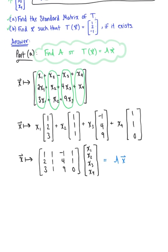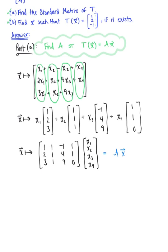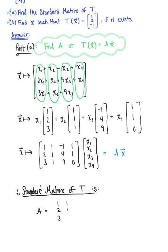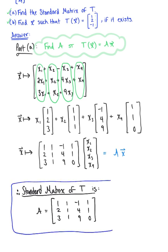We can now see what the standard matrix of our linear transformation is. Therefore, the standard matrix of T is defined as matrix A with column vectors [1, 2, 3], [1, 1, 1], [-1, 4, 9], and [1, 1, 0]. This is the solution to Part A, and we can now use this to help us with Part B.